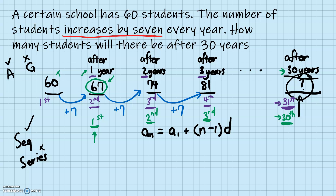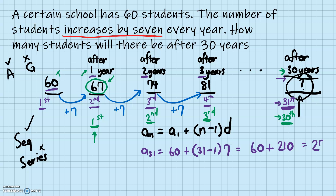Using the purple method: a1 = 60, solving for the 31st term. a31 = 60 + (31 − 1) × 7 = 60 + 30 × 7 = 60 + 210 = 270. So after 30 years there are going to be 270 students.